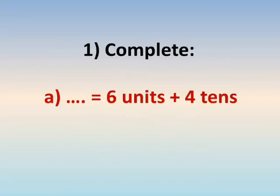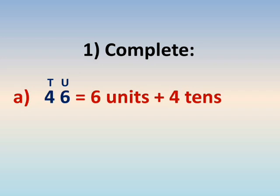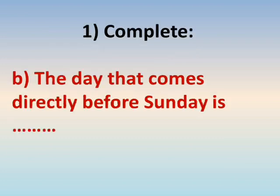Model testing number one complete: A. dots equals six units plus four tenths. Write units in the right hand side and tens in the left hand side, then write six under the units digit and four under the tenth digit. It will be forty-six.